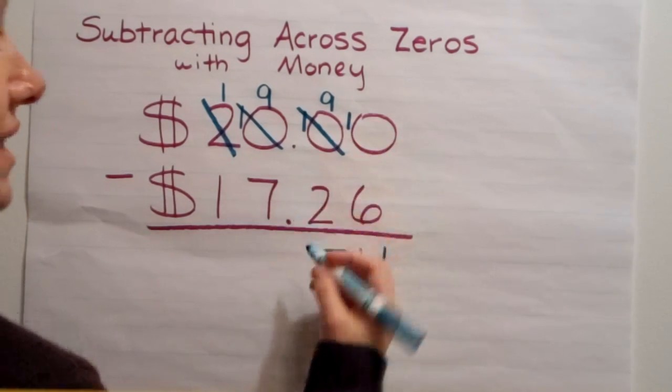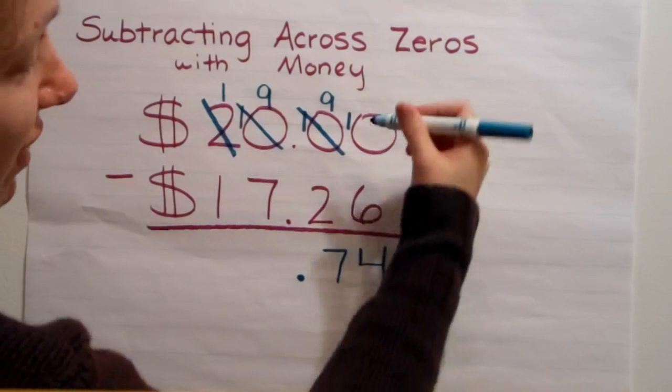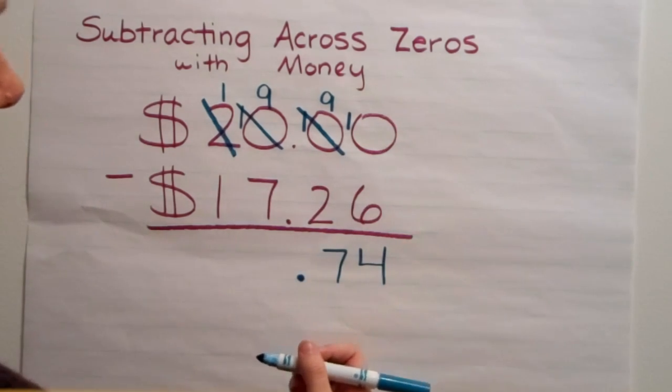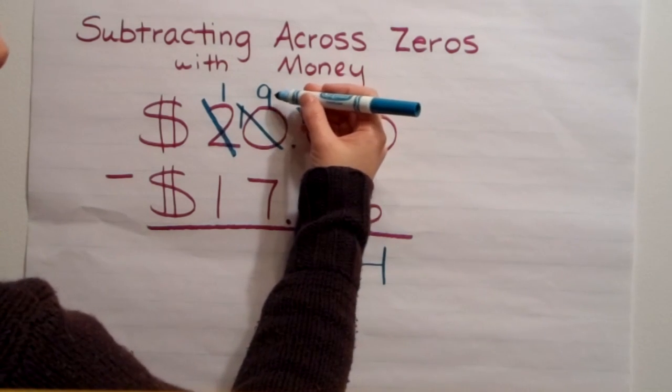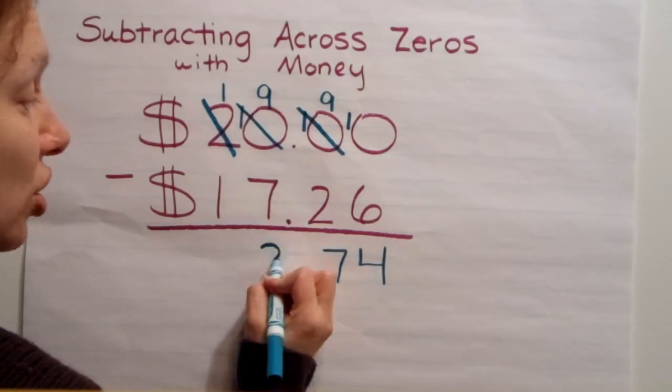Let me bring my decimal point straight down. I want to try and keep everything lined up as nicely as I can. In my ones place, I have nine take away seven, which is two.